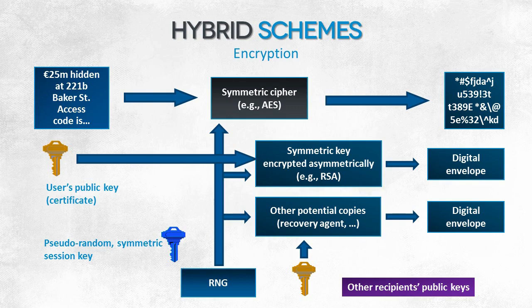If the ciphertext is intended for six recipients, you should repeat the operation six times. The recipients' public keys will be used for encrypting the session key. The number of session key copies matches the number of recipients. Each copy is encrypted using a different public key.